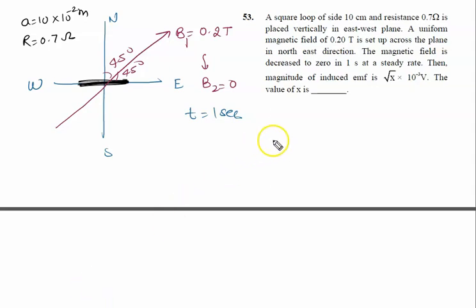We know induced EMF is given by -dΦ/dt, but we calculate the magnitude, so E = dΦ/dt or (Φ₂ - Φ₁)/t. One flux is zero because one magnetic field is zero, so simply Φ₁/t.